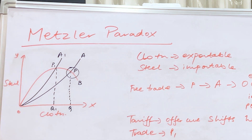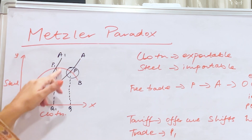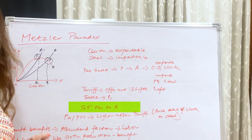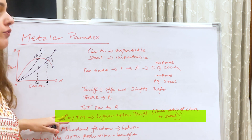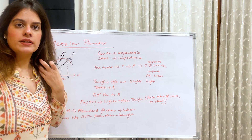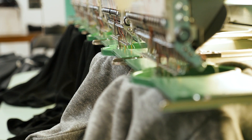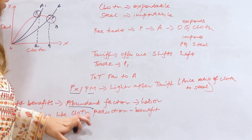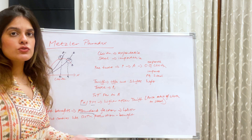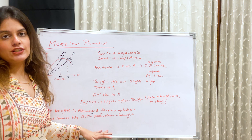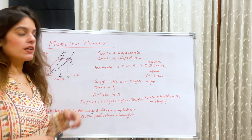After the imposition of tariff, the OA offer curve shifts to the left and we get a new offer curve OA1. Trade now happens at point P1 rather than point P. After tariff, the terms of trade are favorable to country A, and the price ratio of cloth to steel is higher. This means the exportable commodity — cloth — benefits, and since cloth is labor-intensive, labor benefits. So tariff benefits the abundant factor, which is labor, while the scarce factor — steel — loses. Steel industry people lose, whereas labor-abundant industries are the ones who benefit after the imposition of tariff.